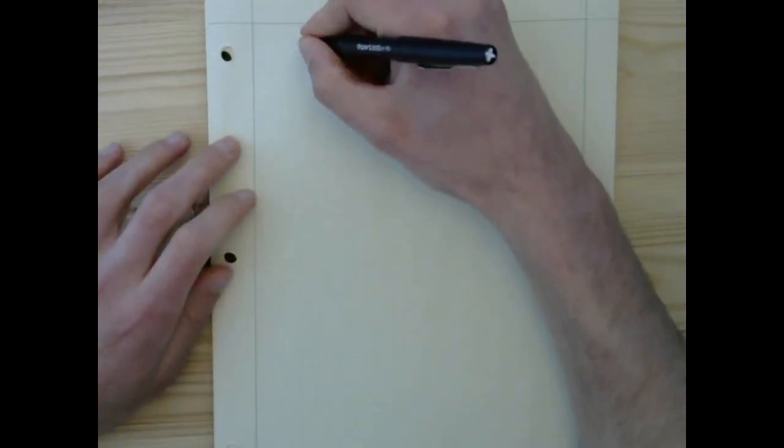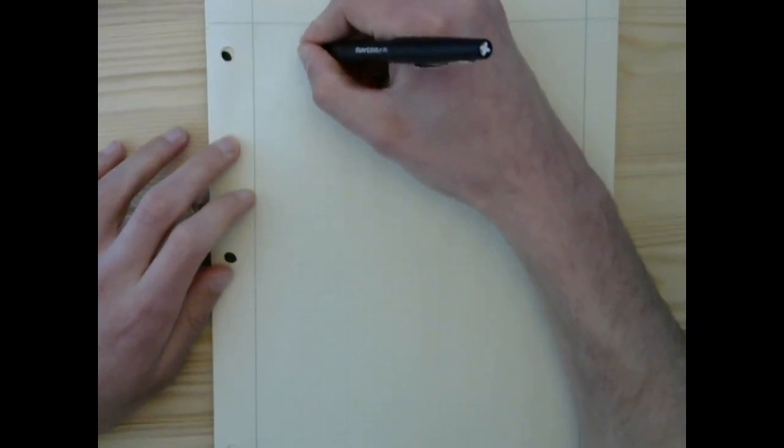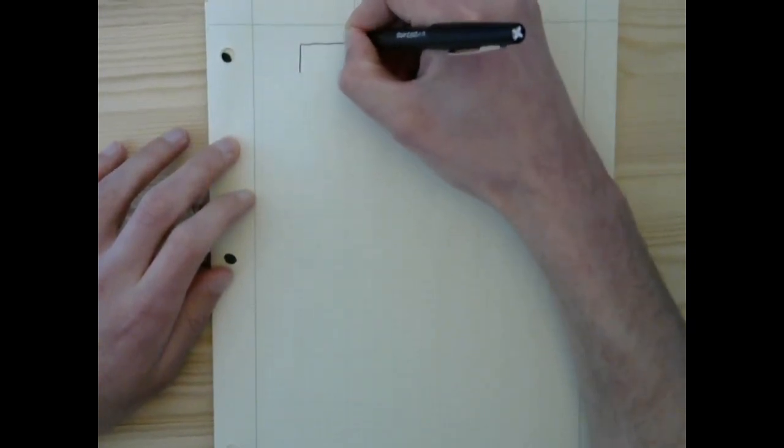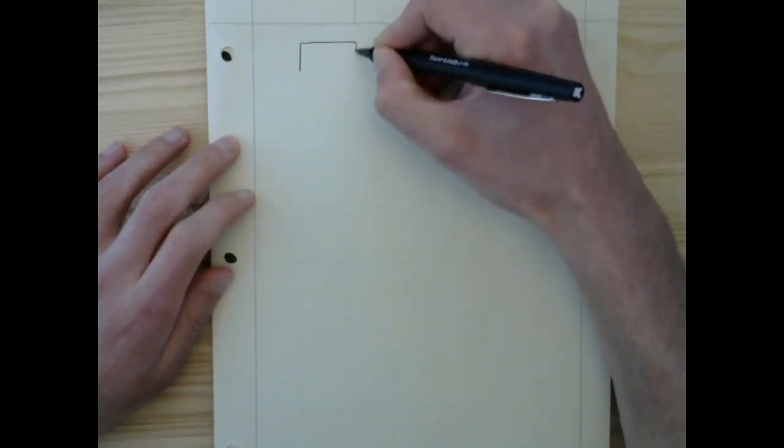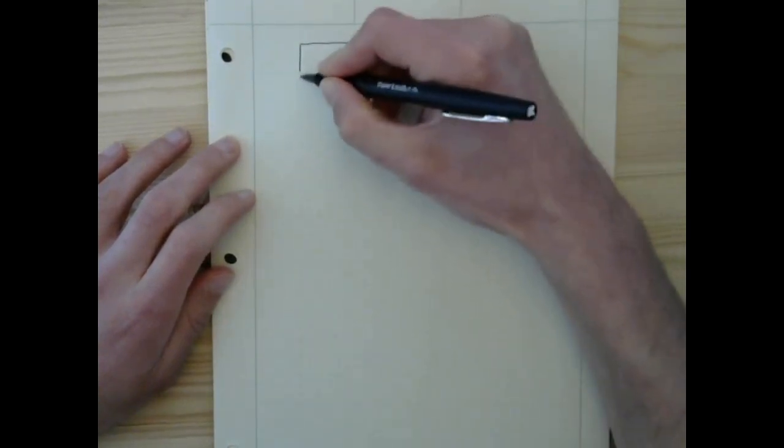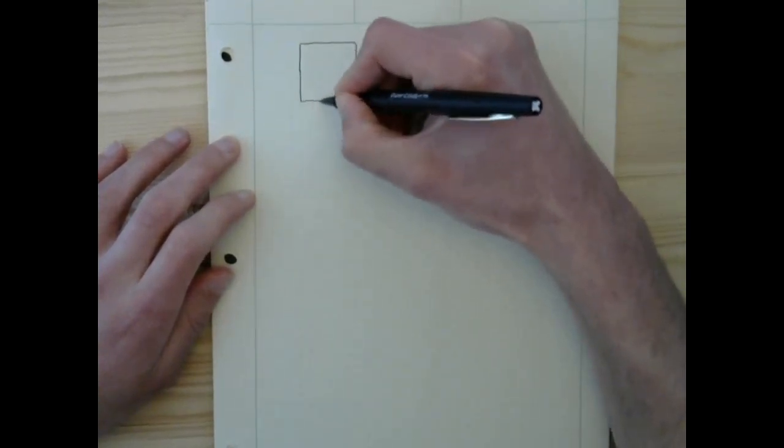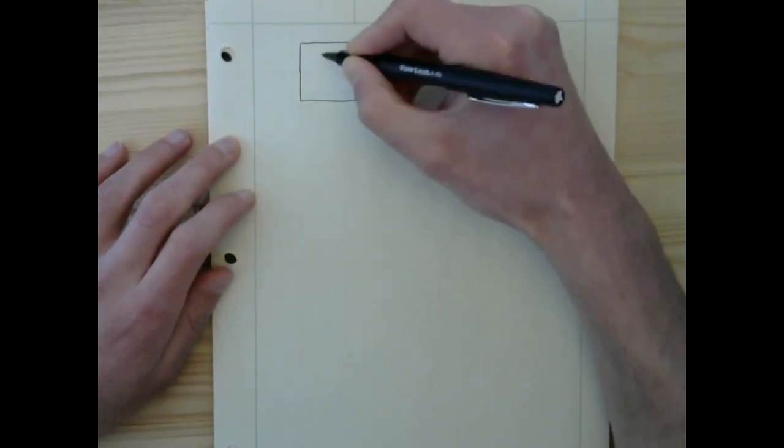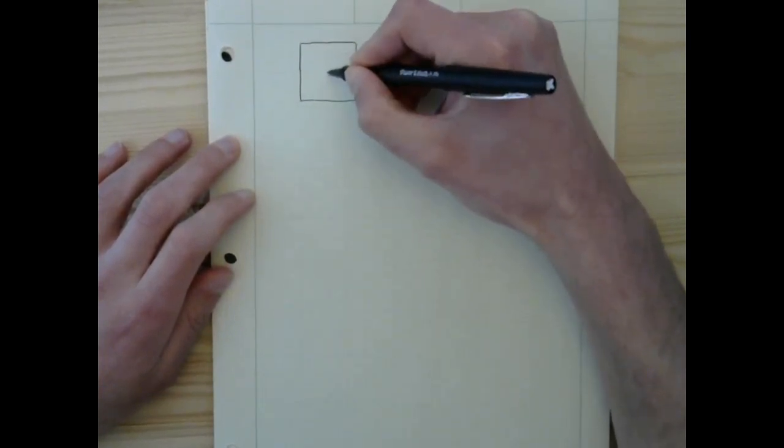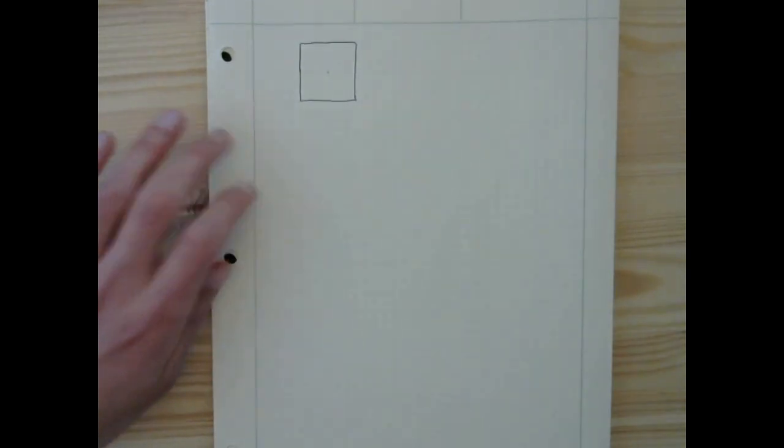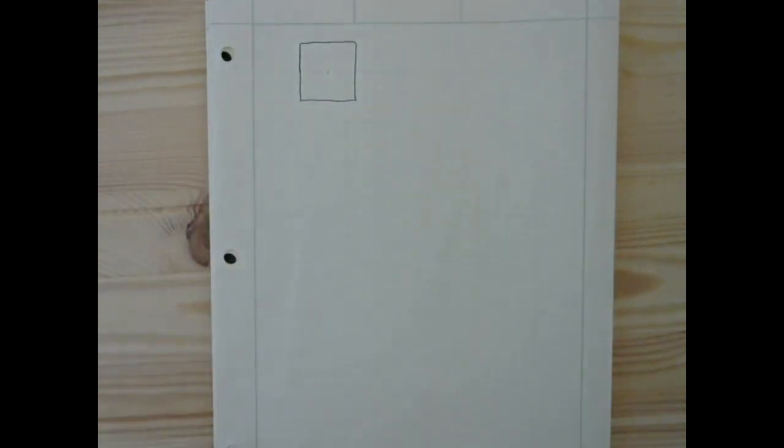Previously when we've talked about buckling in columns, we've assumed that if we have some cross-section, that the load is applied exactly at the center, dead-on at the center. But that's not how things ever are, really.